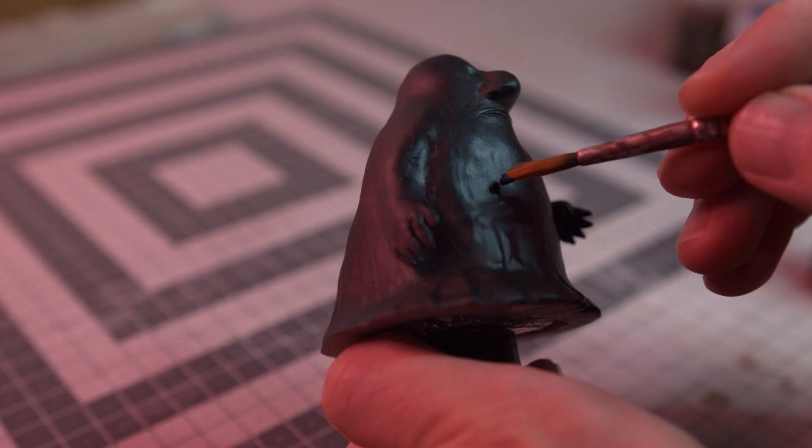I paint the cloth part of the model with a dark blue. Fun fact, this shot is not sped up.